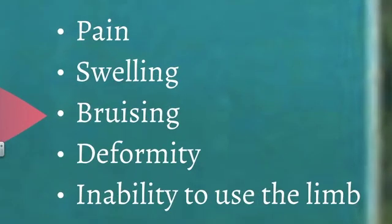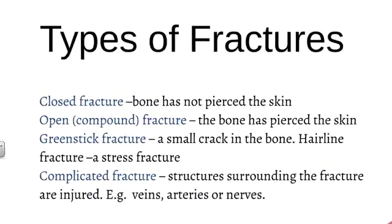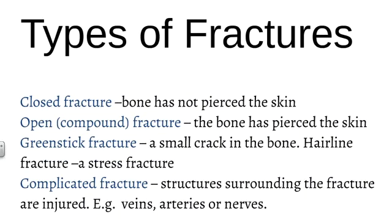The signs and symptoms of fractures include severe pain at the site of the injury, swelling, and you can generally see a deformity compared to the other limb. There'll also generally be bruising and inability to use the limb. You probably need to know at least three of the different types of fractures.